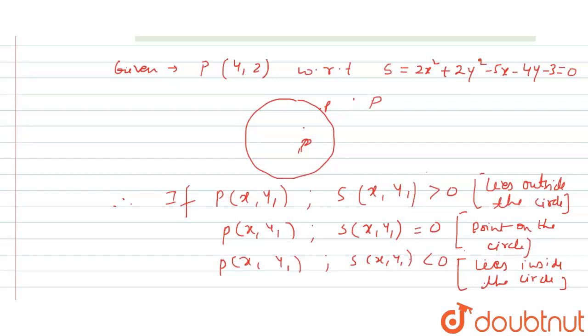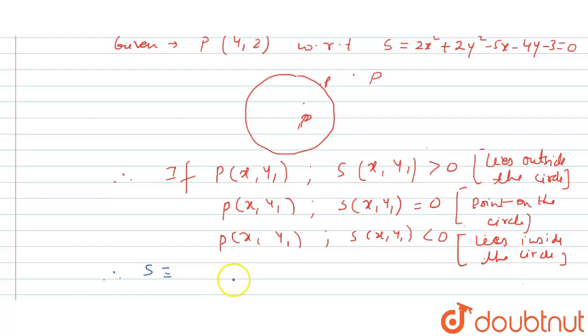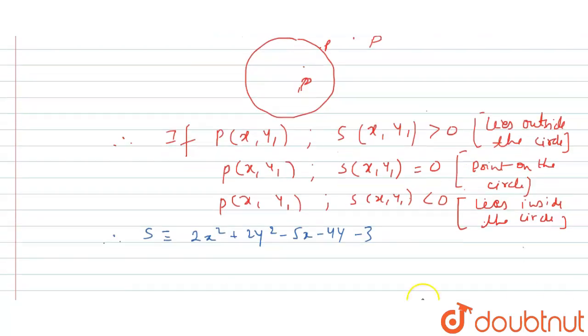Let's start solving it and see what we will get. We have the equation of the circle as 2x² + 2y² - 5x - 4y - 3. Now plug the point...